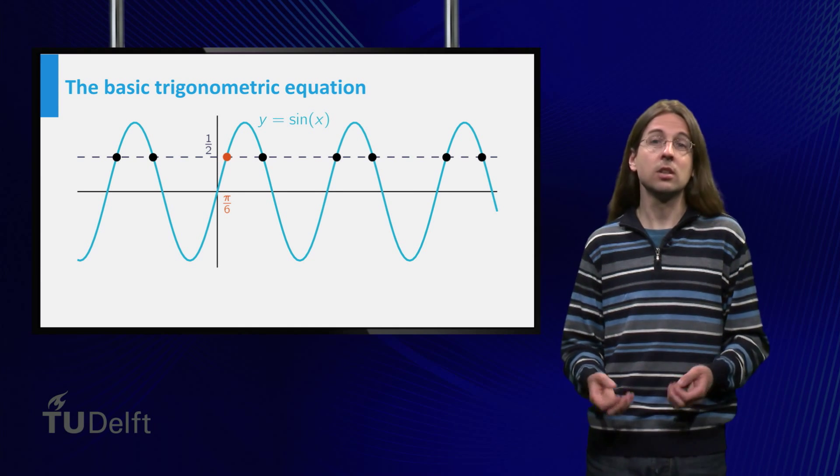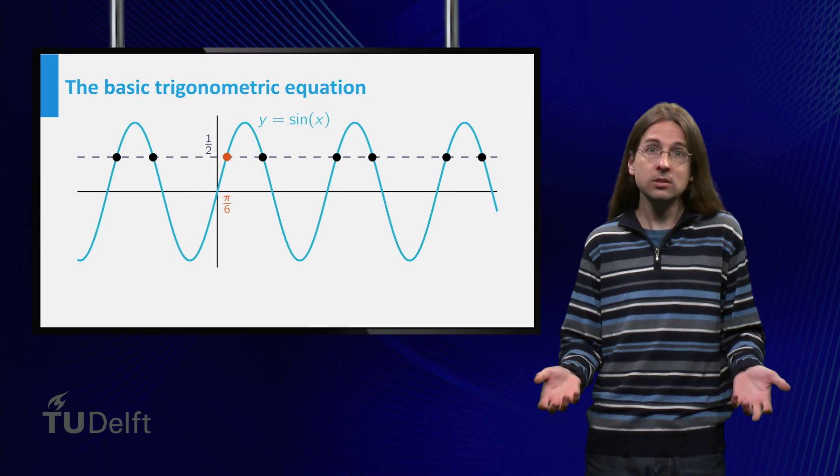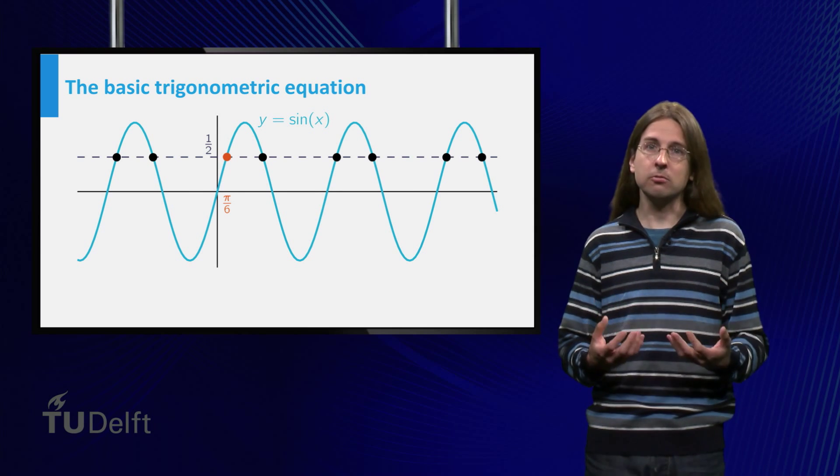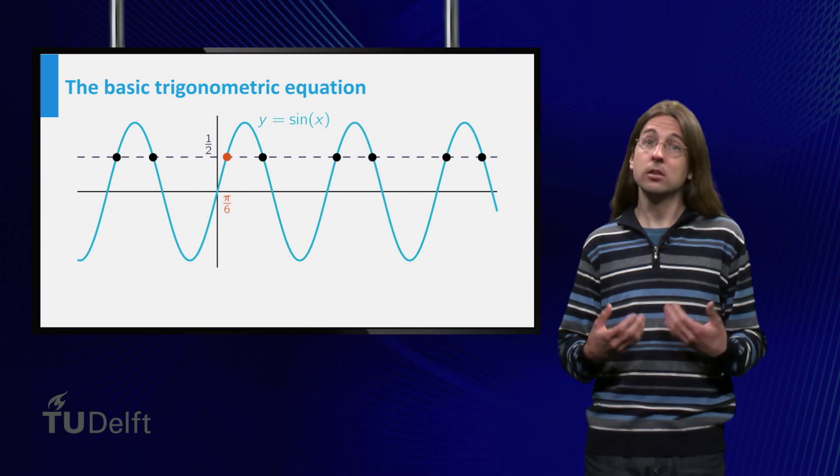How can you find the other solutions, knowing π/6 is a solution? You can use the properties of the graph and of the sine function to find these others.